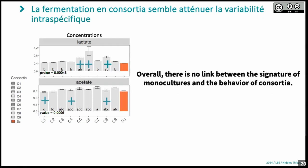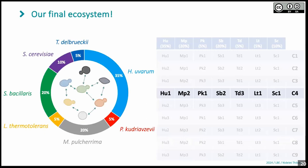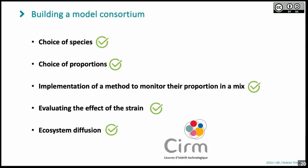We selected the C4 ecosystem as our model ecosystem because it was nearest to the average across all phenotypes — it's an average ecosystem. We have now completed all the steps: species selection, proportions, strain characterization, and the ability to follow all species in the mix. We also deposited all these strains at the Syrum Levure collection in Montpellier so that anybody can request them and use them in their own protocols. We already have orders for these strains, so mission accomplished.